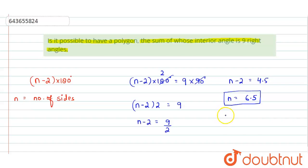That means we cannot have a polygon whose interior angle sum is equal to 9 right angles. So we can just write like this: polygon is not possible with these given conditions.